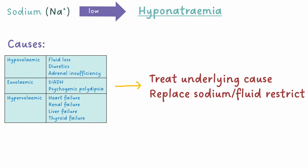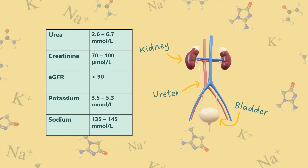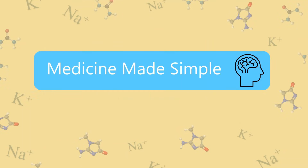Here's a tip for junior doctors: always use your local trust guidelines for managing electrolyte imbalances, as they'll give you specific cut-offs for when you should implement specific treatments. To summarise, we've covered the main aspects of the U&Es blood test, allowing us to assess kidney function and manage any electrolyte abnormalities. Please consider subscribing and liking the video if you found it useful. Thanks for watching, see you next time!